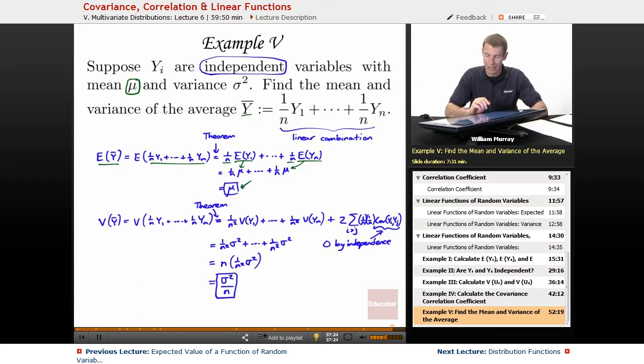The variance is a little bit messier. The variance of a linear combination. Again, you can split it up into all the separate variances. But when you pull out the coefficients, they get squared. So that's why we get 1 over n squared on each of these coefficients. And then there's this cross term, 2 times the sum of the coefficients. Those are a little messy there, but that says 1 over n times 1 over n. And that's coming from these coefficients right here. And the covariance of yi times yj.